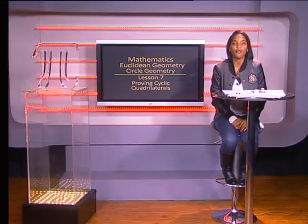Hello Grade Elevens. In this lesson, we will look at the different ways of proving that a quadrilateral is a cyclic quadrilateral. For that, we need to prove that all four of the vertices of a quadrilateral lie on the circumference of a circle.